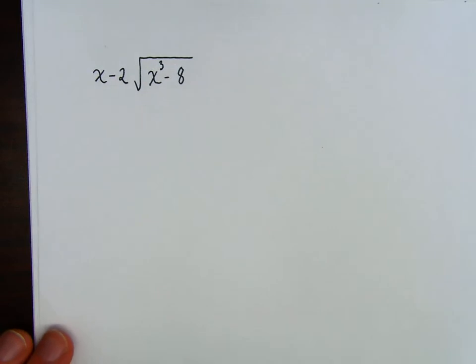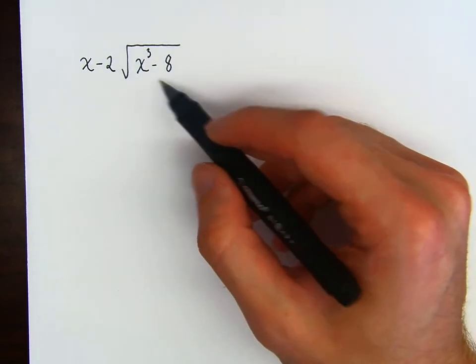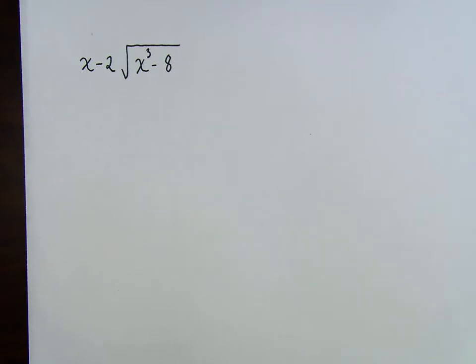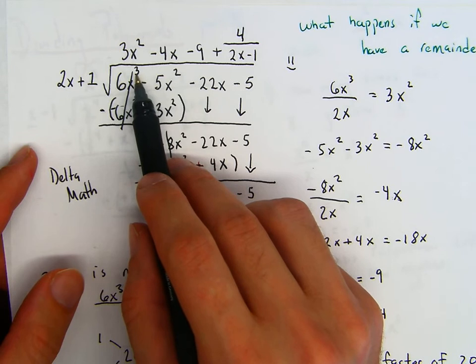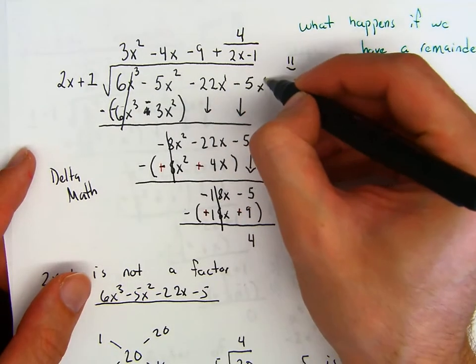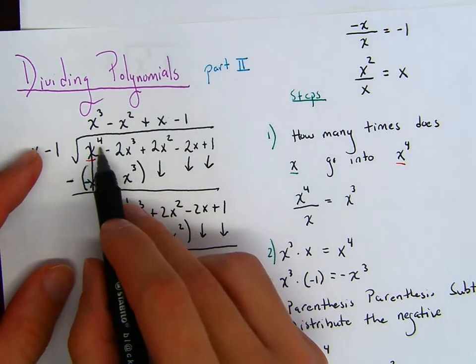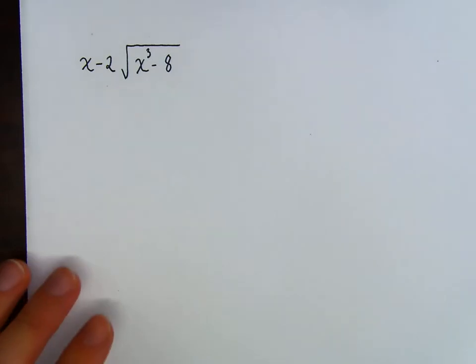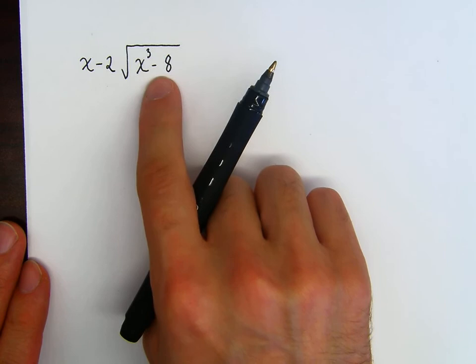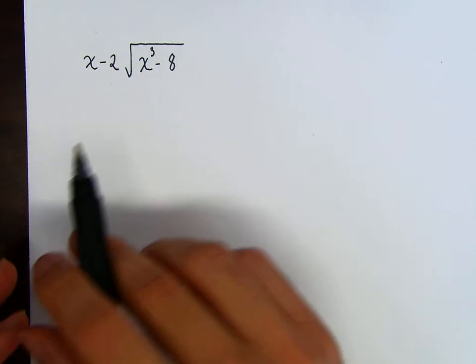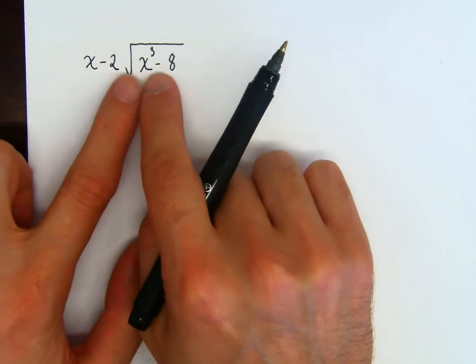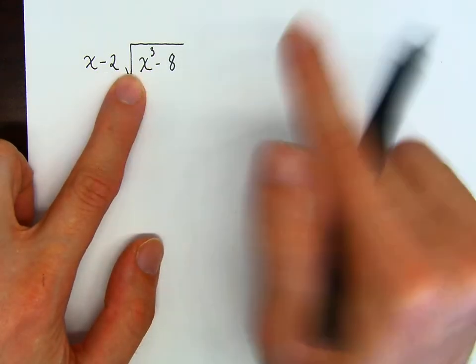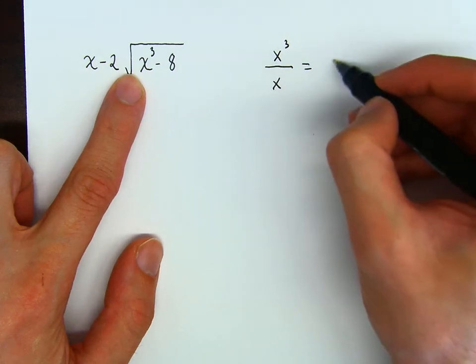Last example, and then we will be done. Let's take a look at this one: x cubed minus 8 divided by x minus 2. For the problems we've been doing, notice that the order of the exponents are in descending order, such as 3, 2, 1. But here we don't have that — we just have x cubed minus 8. Trust yourself. What's the first thing you're going to do? How many times does x go into x cubed? x cubed is on top, x is on the bottom — so x cubed divided by x is x squared. We put that x squared over here.